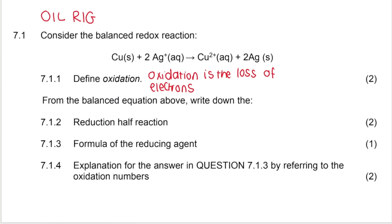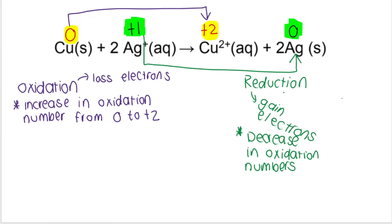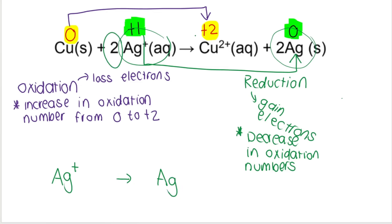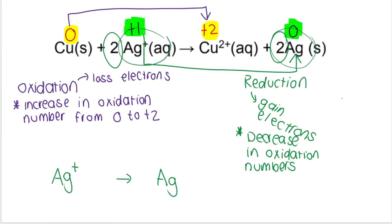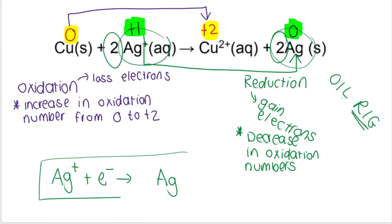So back to the question: what is the reduction half reaction? We just said that the reduction half reaction involves Ag⁺ and Ag. On the left-hand side of the equation we had Ag⁺; on the right-hand side we have Ag — just ignore the big twos. The big twos are there because they help balance the net reaction. But in the reduction half reaction, we go from Ag⁺ on the left-hand side to Ag on the right-hand side. Reduction is gain of electrons, so Ag⁺ must have gained an electron to form Ag.